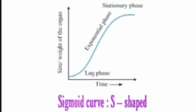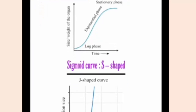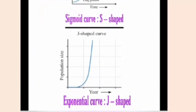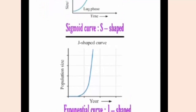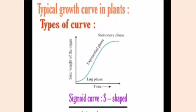Typical growth curve in plants. A growth curve is an empirical model of evolution of a quantity over time. It shows a graphical representation of how a particular quantity increases over time. Growth curves are of two types: exponential growth curve and sigmoid growth curve. Sigmoid growth curve shows an S-shaped graph, whereas exponential growth curve shows a J-shaped graph.